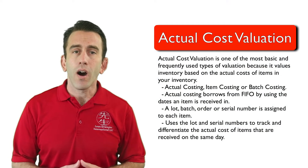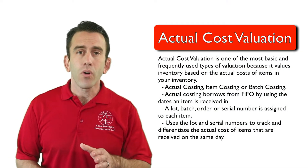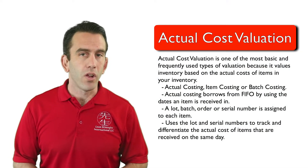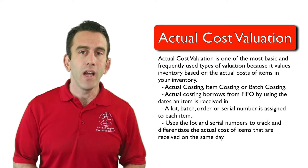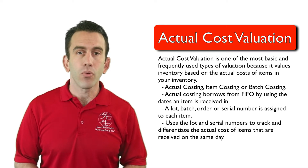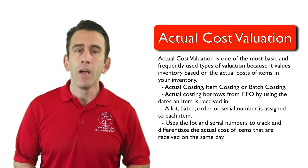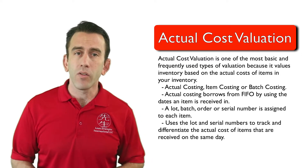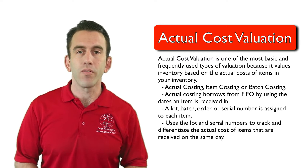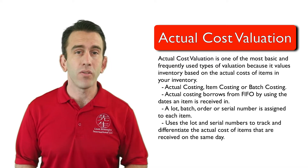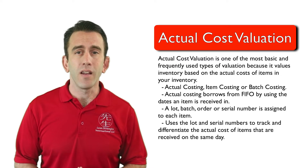This is where actual cost is different from FIFO. Actual cost uses the lot and serial numbers to track and differentiate the actual cost of items that are received on the same day. Ultimately, this enables you to track the actual cost of the items or batches that have a lot or serial number assigned to them.